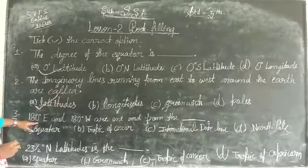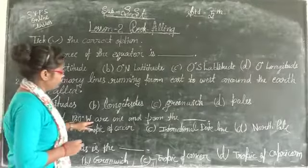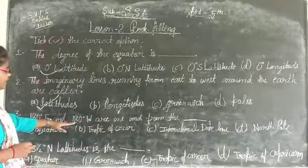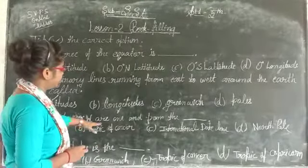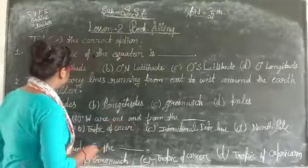180°E and 180°W. 180 east and 180 west - these are the lines from the earth. What will be in this?